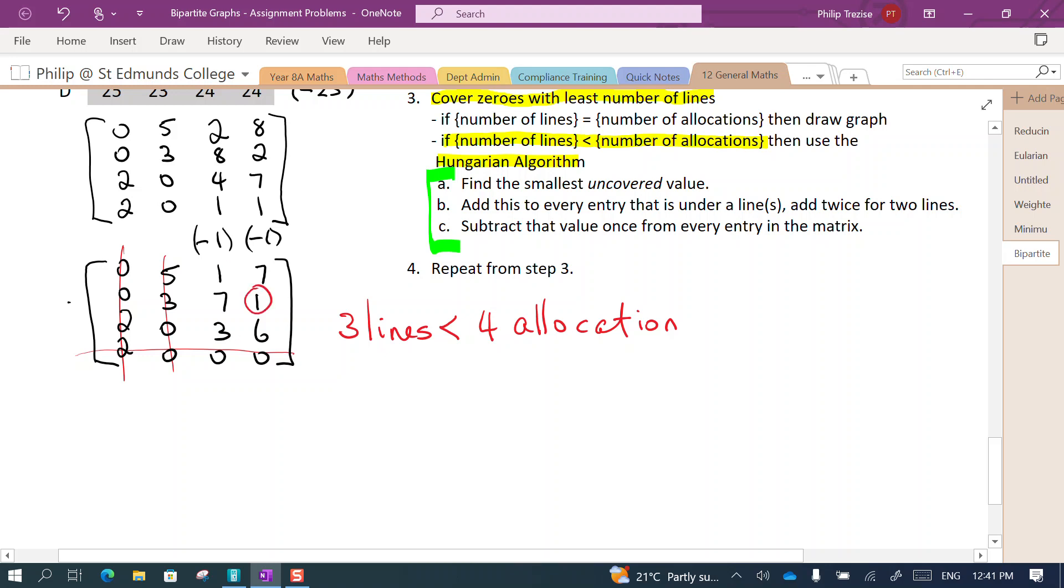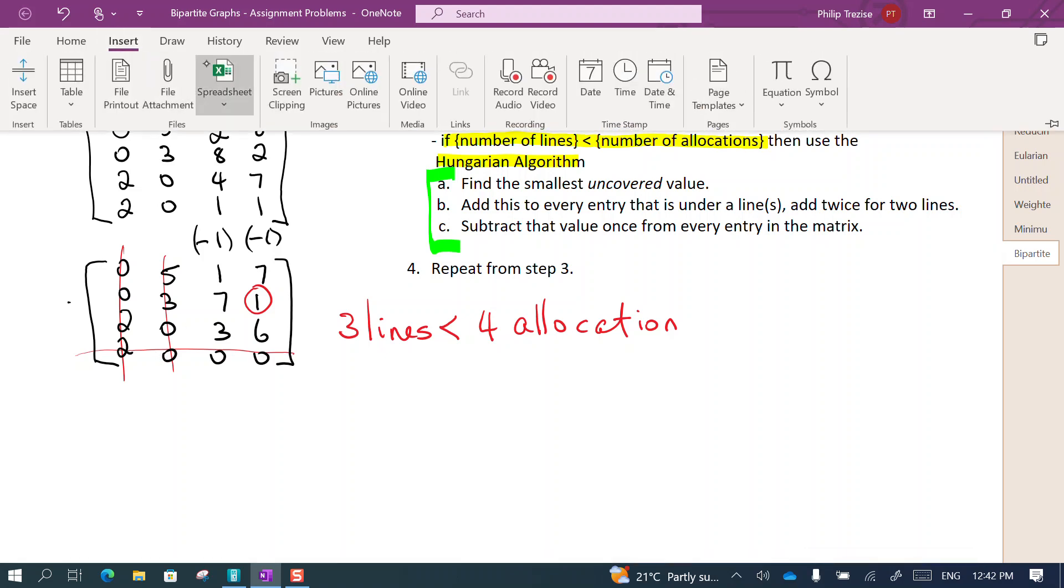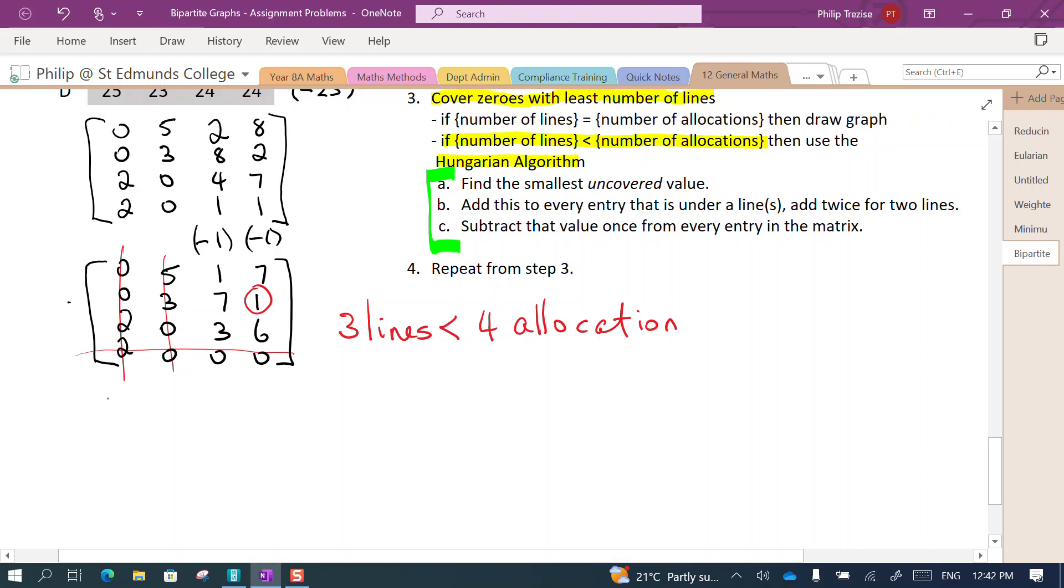Well the uncovered values are in this corner and the smallest one is one. Part B: add this to every entry which is under a line or lines, add twice if there are two. So the entries in the bottom here will get added, that one will be added twice because there's an intersection of two lines. Then add a single one along here. It's probably clearer if I start to redraw the matrix.